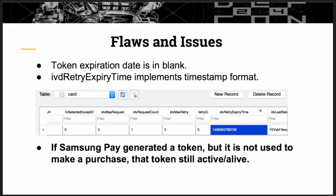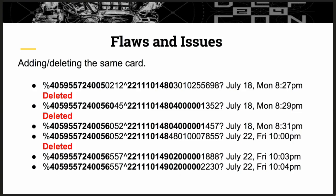Continuing with flaws and issues: when I was able to make a backup of the Samsung Pay databases, in the card table I found the token expiration date was blank in that specific field. Also, the library implements a timestamp format which expires over 24 hours. The main problem here is if Samsung Pay generates a token but you don't use it to make a purchase, that token is still alive and active. For example, if I ask you to show me how Samsung Pay works and you show me but don't complete a transaction, that token is still alive. When you close the application and open it again, you get a new token, but the last token is still alive.